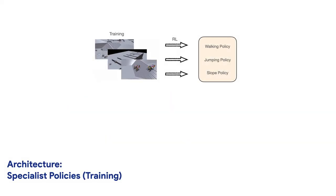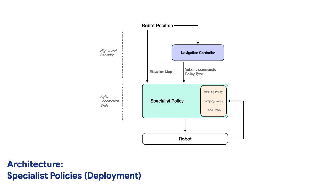In the first approach, we train individual specialist locomotion skills for different obstacles using on-policy reinforcement learning methods. We deploy these specialist policies by combining them with a navigation controller that selects the policy type to execute and provides velocity commands based on the robot's position.